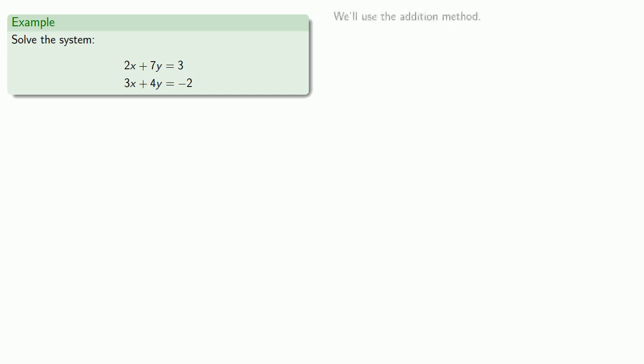We can use the addition method. Here, we look at the coefficients of a variable—let's say x—and multiply each equation by the coefficient of x in the other equation, changing one of the signs.